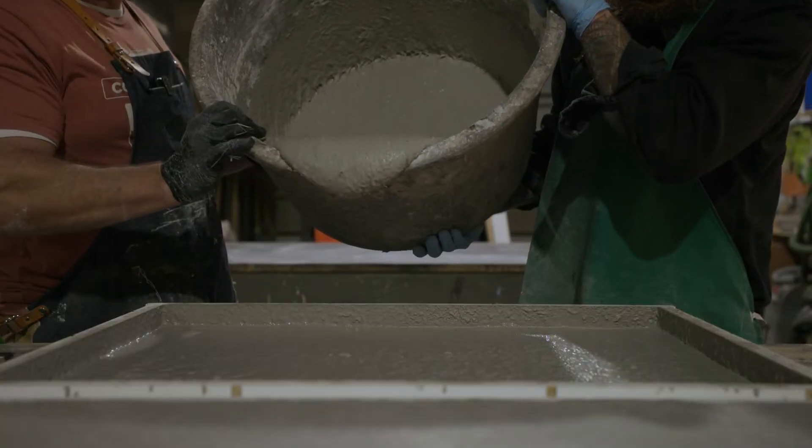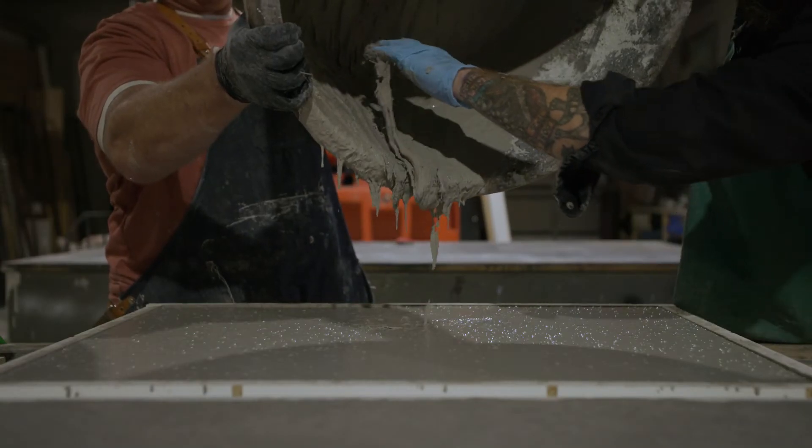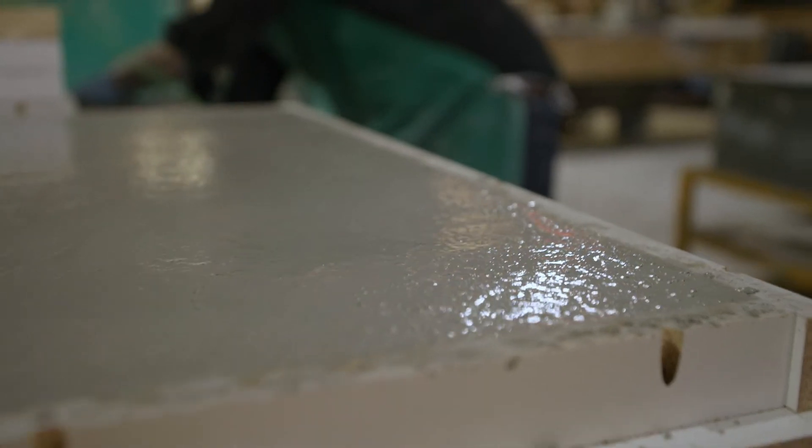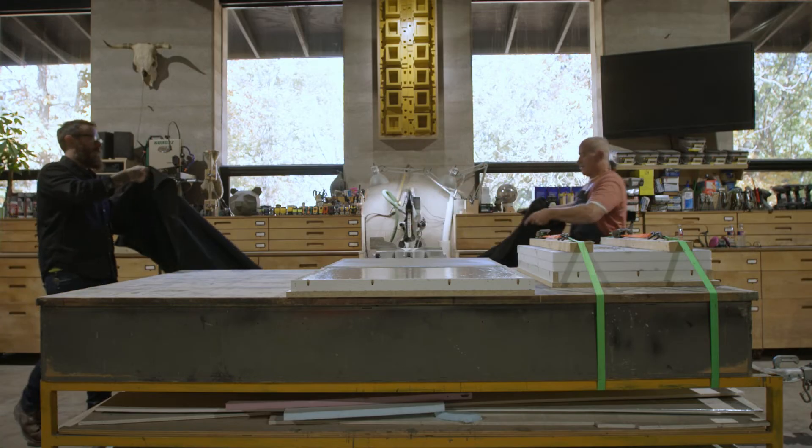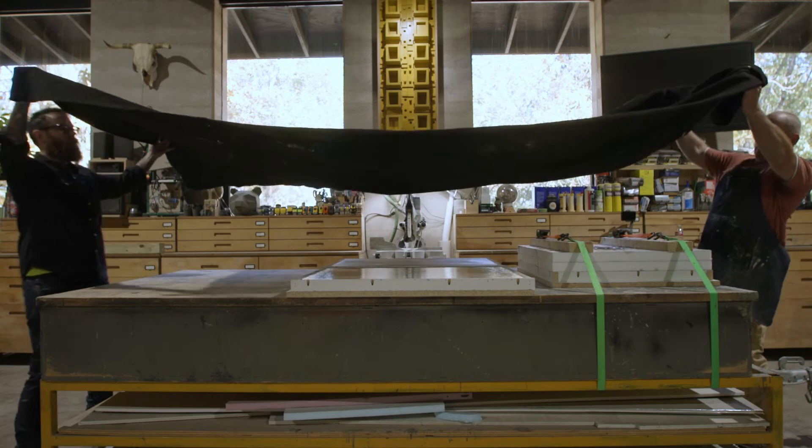Pour the SCC GFRC backcoat into the form. Give the casting table a few gentle shakes to level out the mix, then allow the concrete to rest for a few hours before covering.